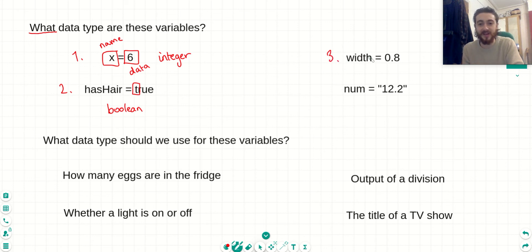Our third example, we have a variable named width, and it has a value of 0.8. Obviously, there's a decimal point, which means that this is a float, because it's a floating point number. And in our last example, we have a variable called num, and it's equal to 12.2. Now, this is a bit of a tricky question. So although it's got a float inside of it, it's actually a string.